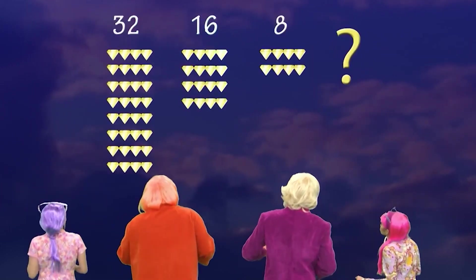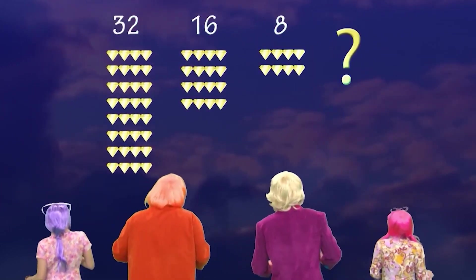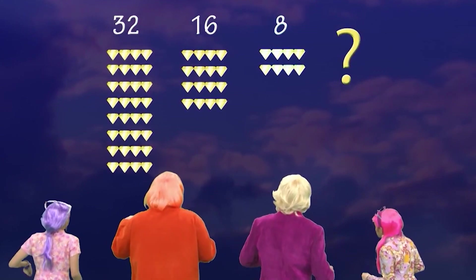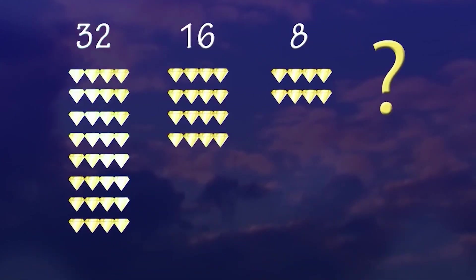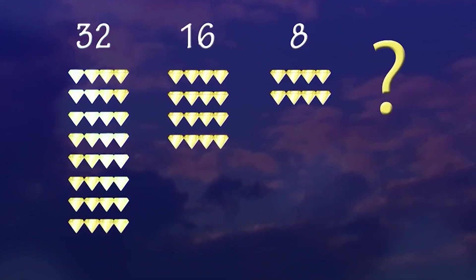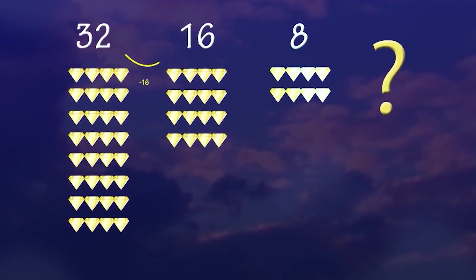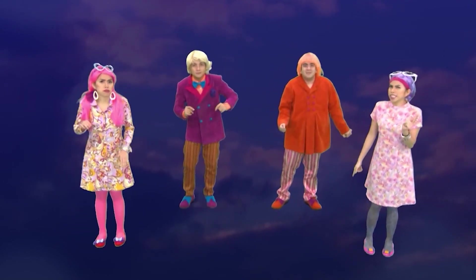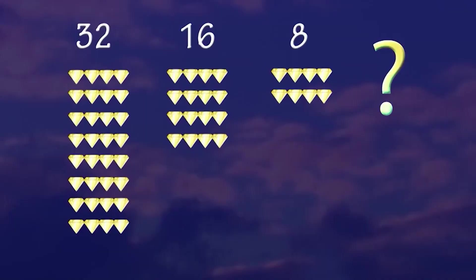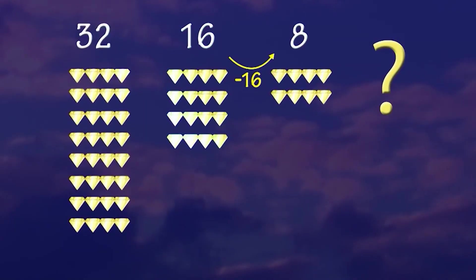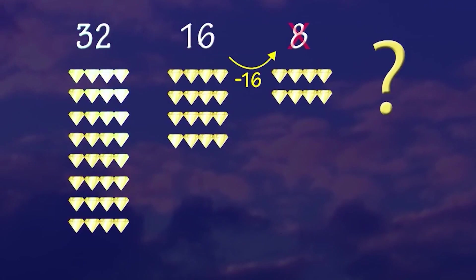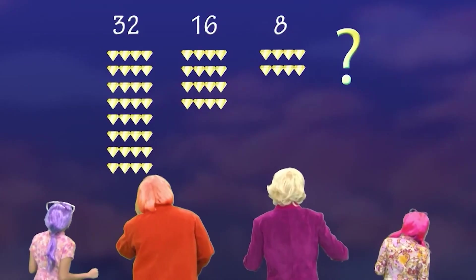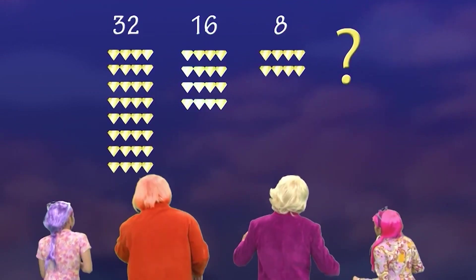Alamin nga natin ang pattern sa mga numbers na ito. Lumiliit ang numbers, baka nagsosubtrak. Ano ang isasubtrak sa 32 para maging 16? 16! Gamitin nga natin sa 16: 16 minus 16 is... Hindi 8.